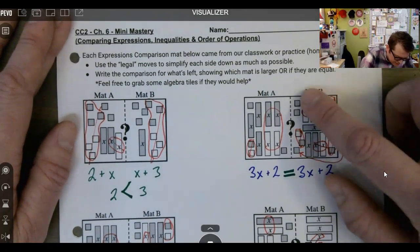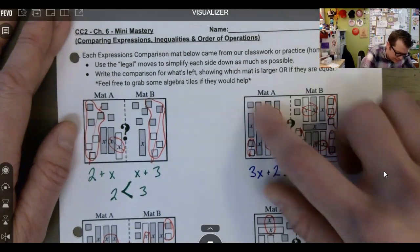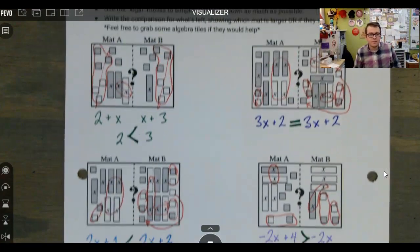So then one, two, three X's plus two extra, one, two, three X's plus two extra. I believe mat A is equal to mat B.